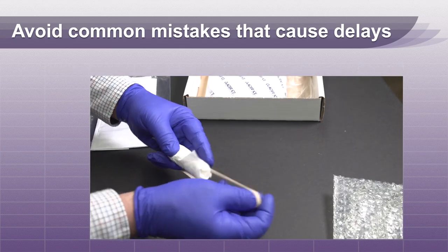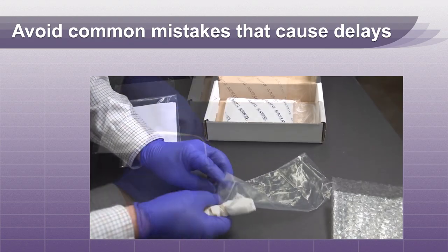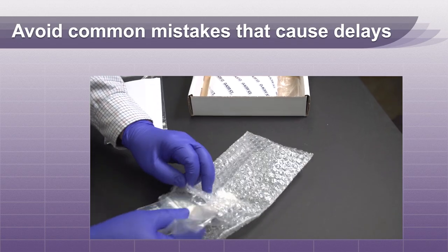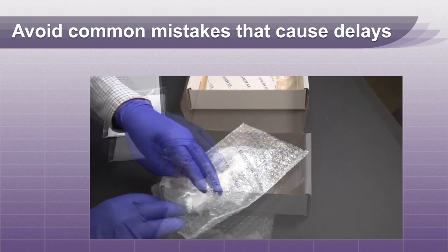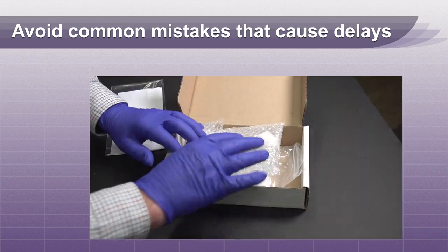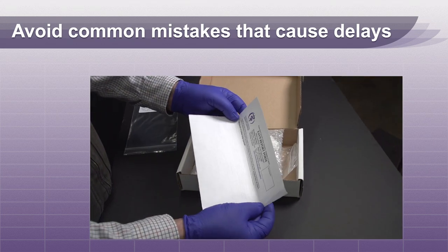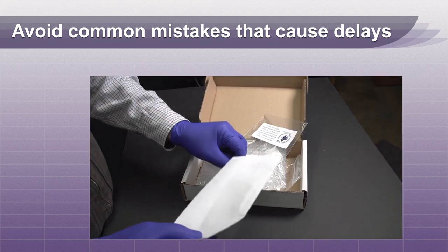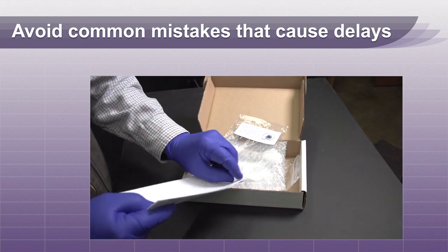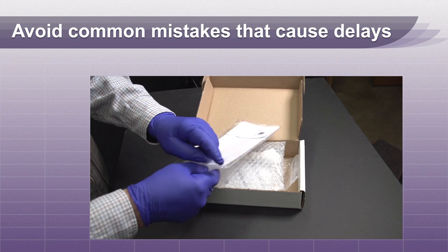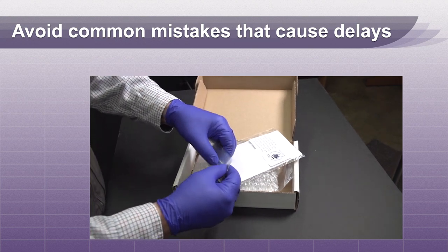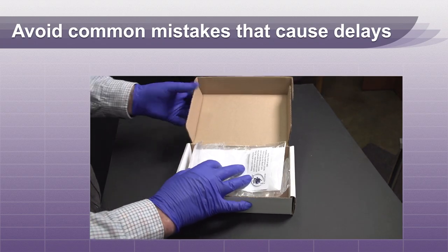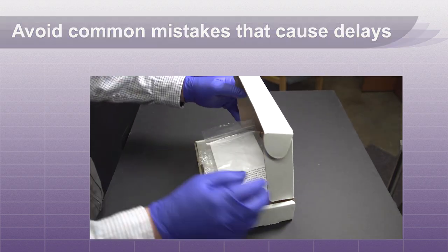Pack samples in a small cardboard box with one frozen gel pack and bubble wrap for cushioning. The FAVN form and payment should be placed in a clear plastic bag. If you are sending multiple samples, put all FAVN forms in the same bag. However, each sample should be individually wrapped in a paper towel and inserted into its own plastic bag.